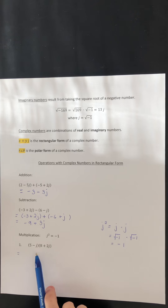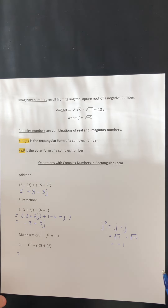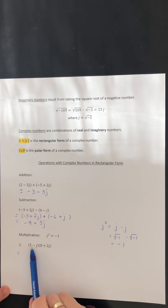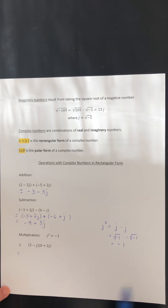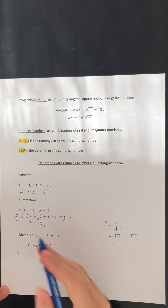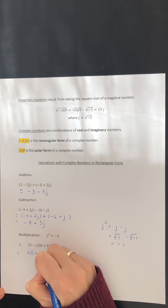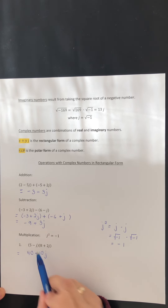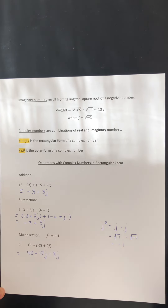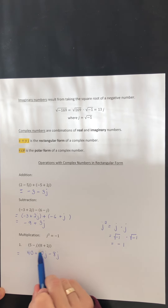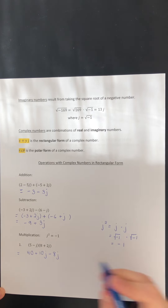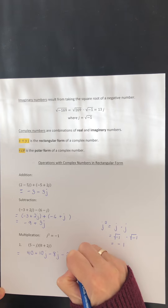To multiply two complex numbers in binomial form, we use the FOIL method — first, outside, inside, last — giving us four terms. The first term is 5 times 8, or 40. On the outside, we have 5 multiplied by 2j. On the inside, we have negative j multiplied by 8. The last term is negative j multiplied by 2j, which is negative 2j squared.